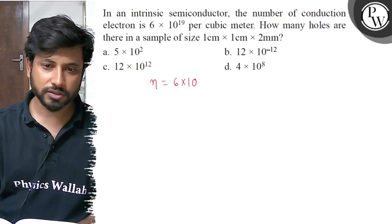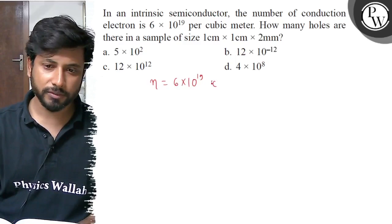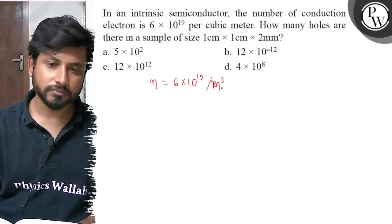So, electrons' density is 6 into 10 to the power 19 per cubic meter, per meter cube.